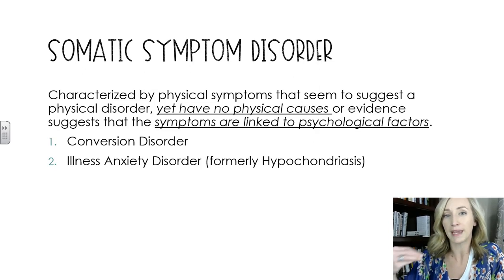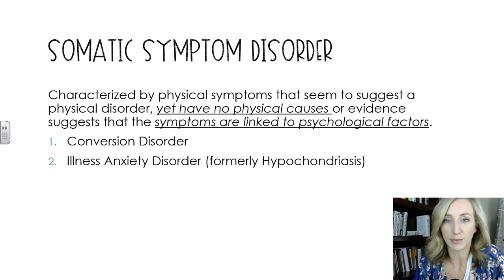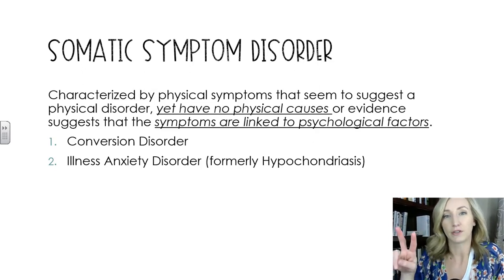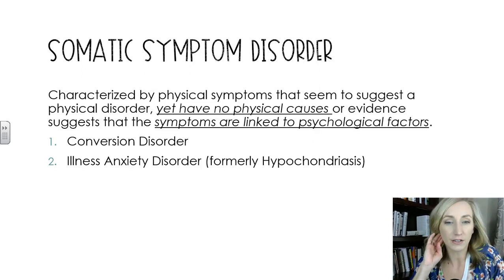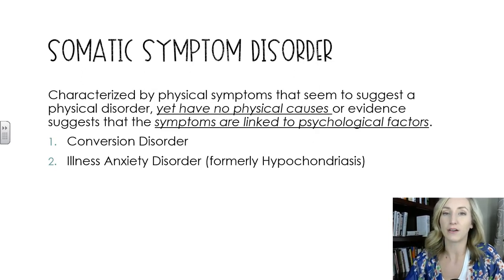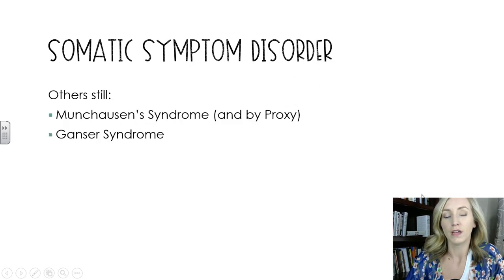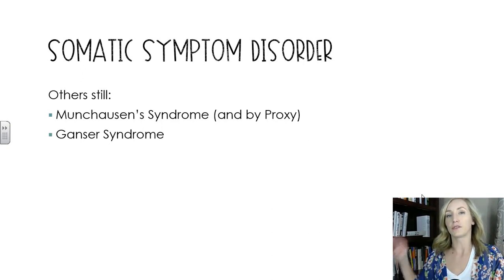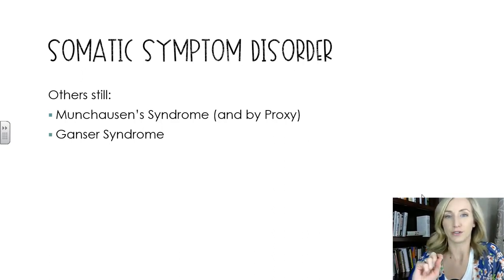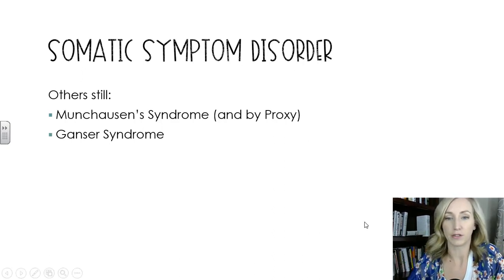This psychological disorder manifests itself in physical symptoms. There is a disorder just called somatic symptom disorder, but there are also two subcategories: conversion disorder and illness anxiety disorder, formerly known as hypochondria. It's now called illness anxiety disorder in the DSM-5. Two other disorders to note are Munchausen syndrome, Munchausen syndrome by proxy, and Ganser syndrome, all under the somatic symptom disorders category.